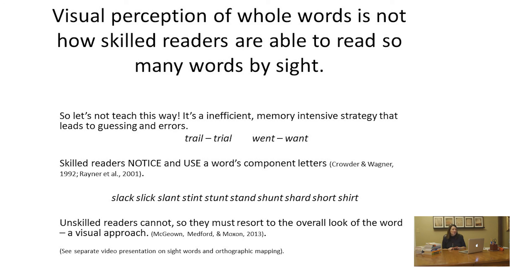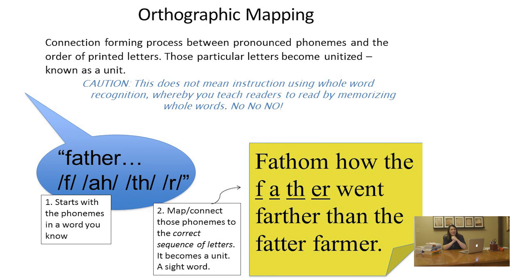As we have seen, word shape and visual memorization of words has not been a supported theory of word reading for many decades. Too much evidence from clever experiments shows that we recognize a word's component letters, the order that they're in — remember 'trips' and 'strip' — and that we connect or map those letters to the sounds of spoken words in our lexicons. Please see the presentation on orthographic mapping and sight words to understand exactly how this all takes place.